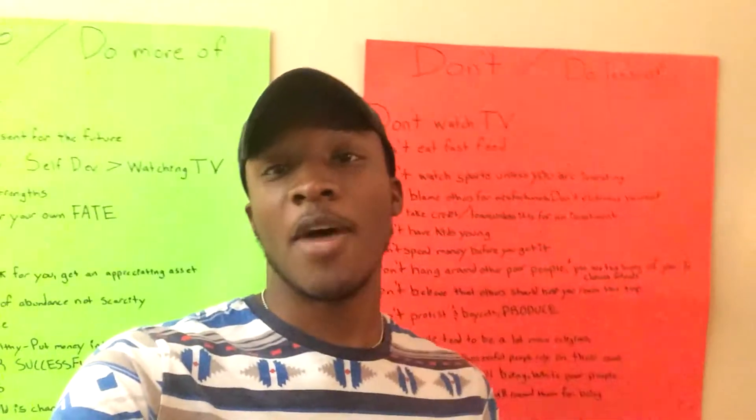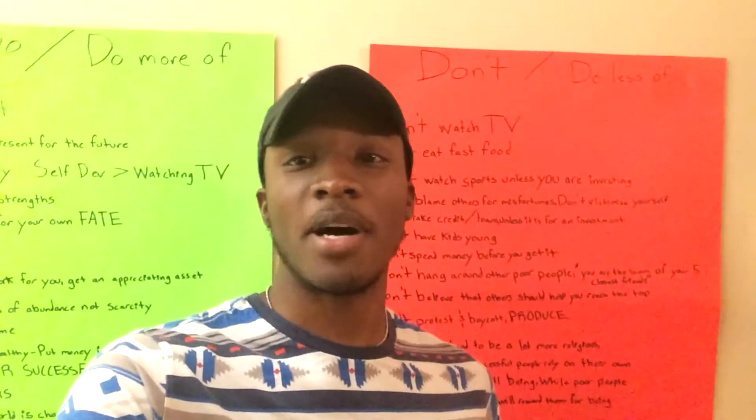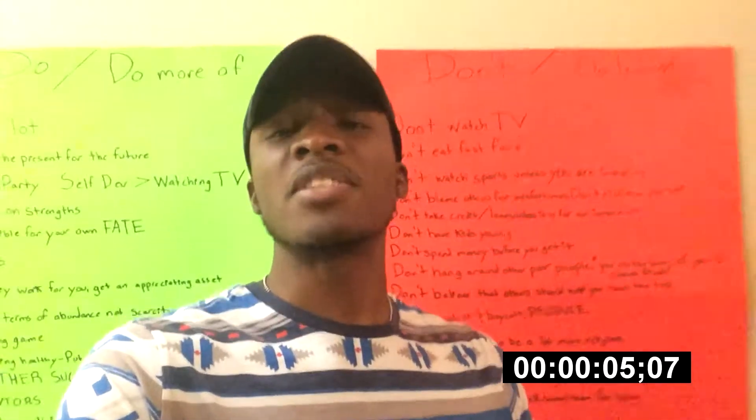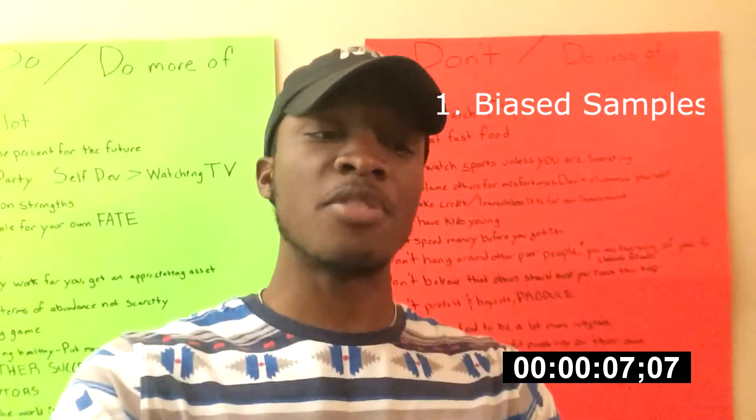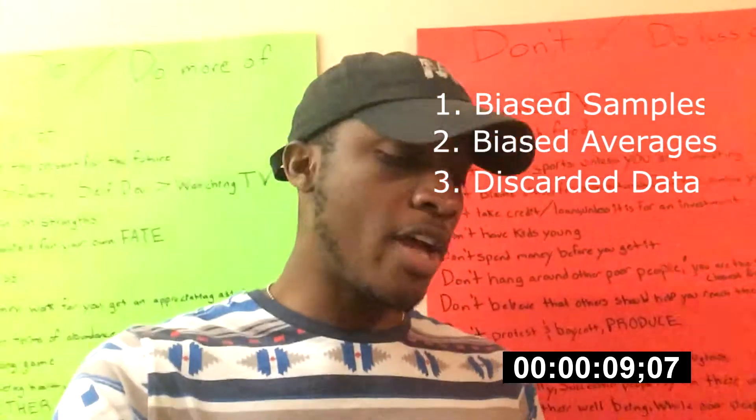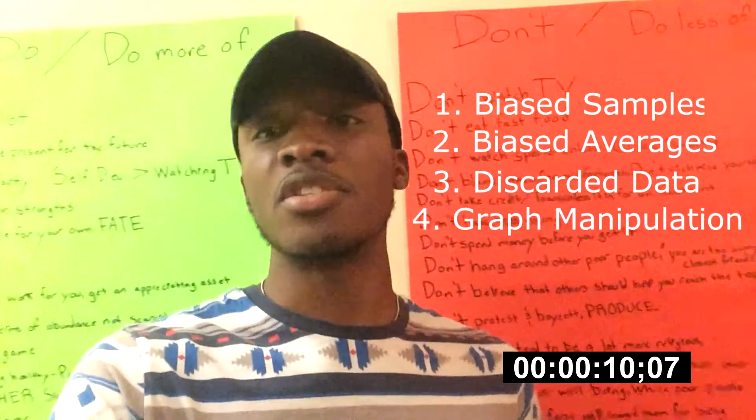This week's book is How to Lie with Statistics by Daryl Huff. This book shows how companies use biased samples, biased averages, discarded data, and graph manipulation to manipulate their data.